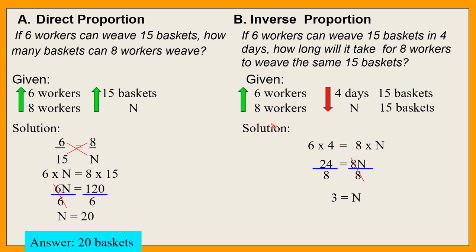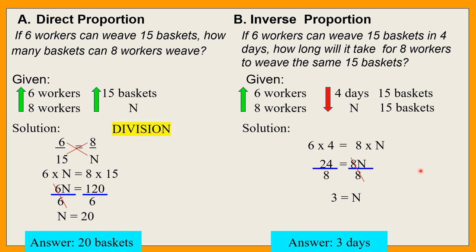So ibig sabihin, kung 8 workers ang gagawa ng 15 baskets na ito, 3 days na lang ang nilang gagawin. Bumaba yung number of days, umakyat dito yung number of workers. Yun yung ibig sabihin ng inverse proportion or sometimes called indirect proportion. Sa direct, fraction or division ang ginagamit; sa inverse, multiplication.